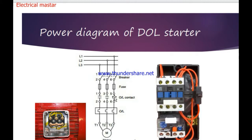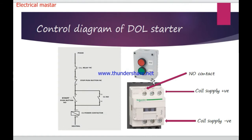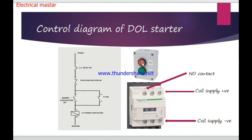The main control diagram: the control diagram of the DOL Starter handles on-off operation and protects against overload and short-circuit conditions. The main important components are the start-stop push button and magnetic contactor. If we start the motor, we press the start button; if we press the stop button, it will turn off. For protection, we connect to the overload relay so when the motor is overloaded, it will protect the motor from damage. That's why we use the DOL Starter.